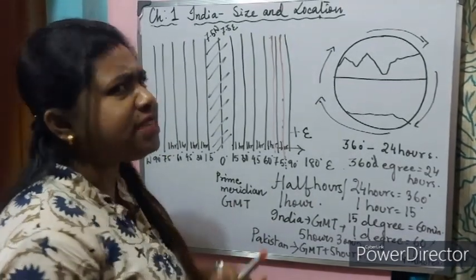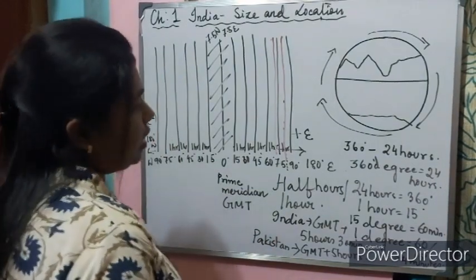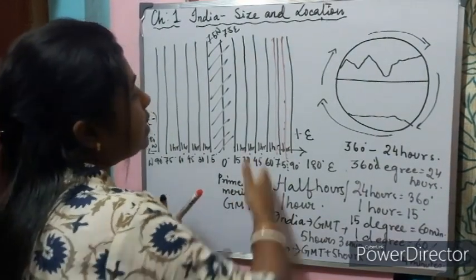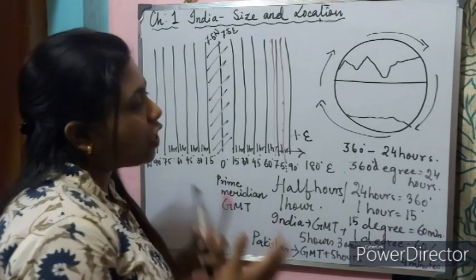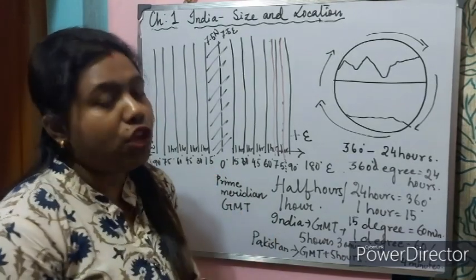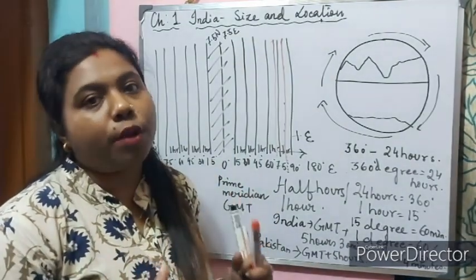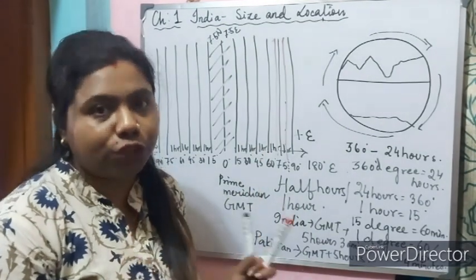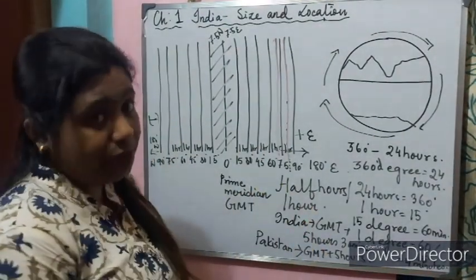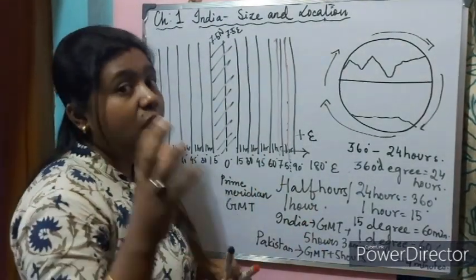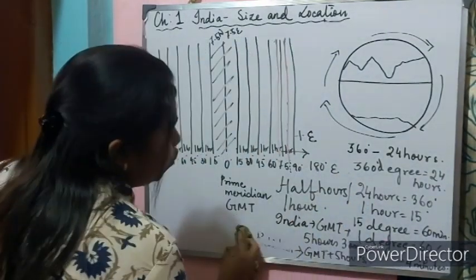Now, what is standard time? Standard time is the time of the standard meridian, which is used to identify the local time for a particular region or country. India's standard time is based on 82 degrees 30 minutes East.